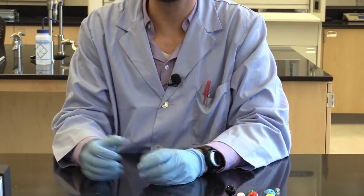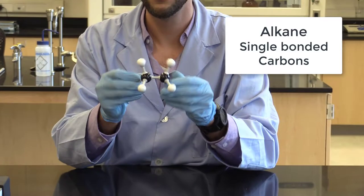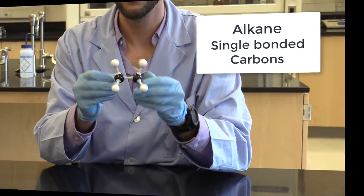Alright, so next we will go over each of those functional groups. So the first one is alkane. One thing to note is this, even though we're calling it a functional group, it really isn't because it can't do any chemistry.